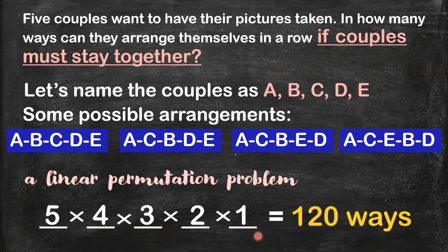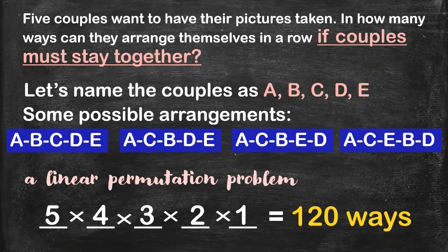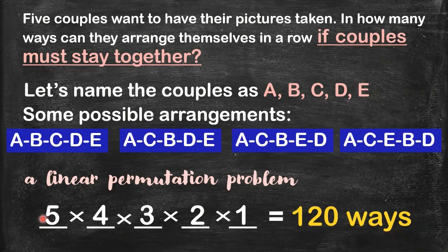Now, my question is, is this the final answer for this question? The answer is no. Because, couple A for example - this one is couple A. That means there are two people who make up this couple. And these two people can switch positions also. To have a clear picture of this problem, let's make use of a tree diagram. But don't forget, we have 120 ways of arranging five couples. But we haven't yet considered the switching of position, for example, of couple A.